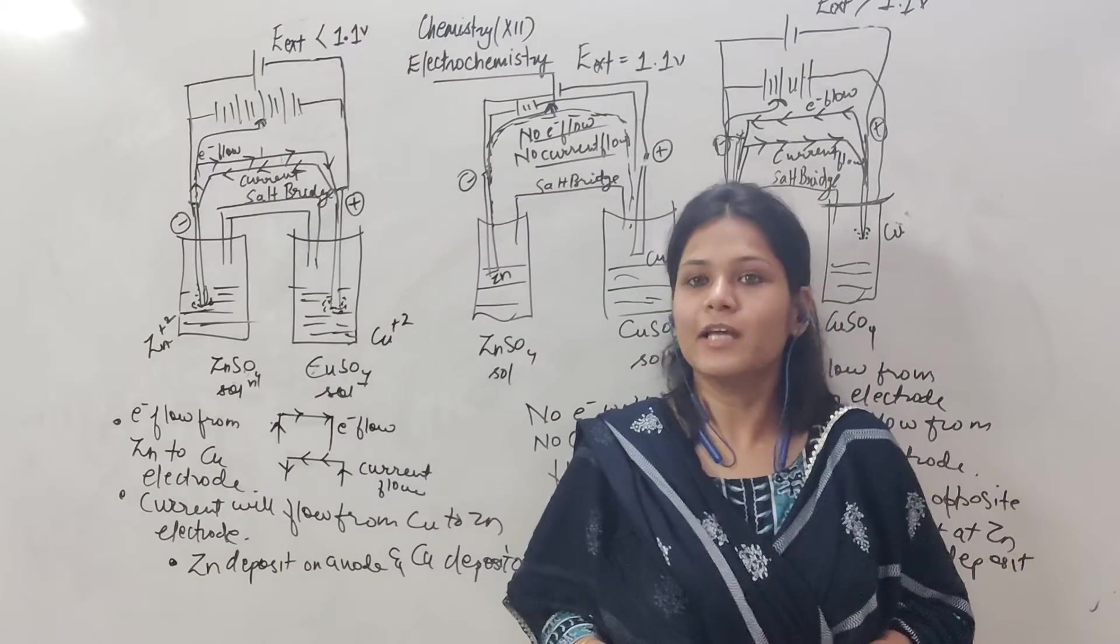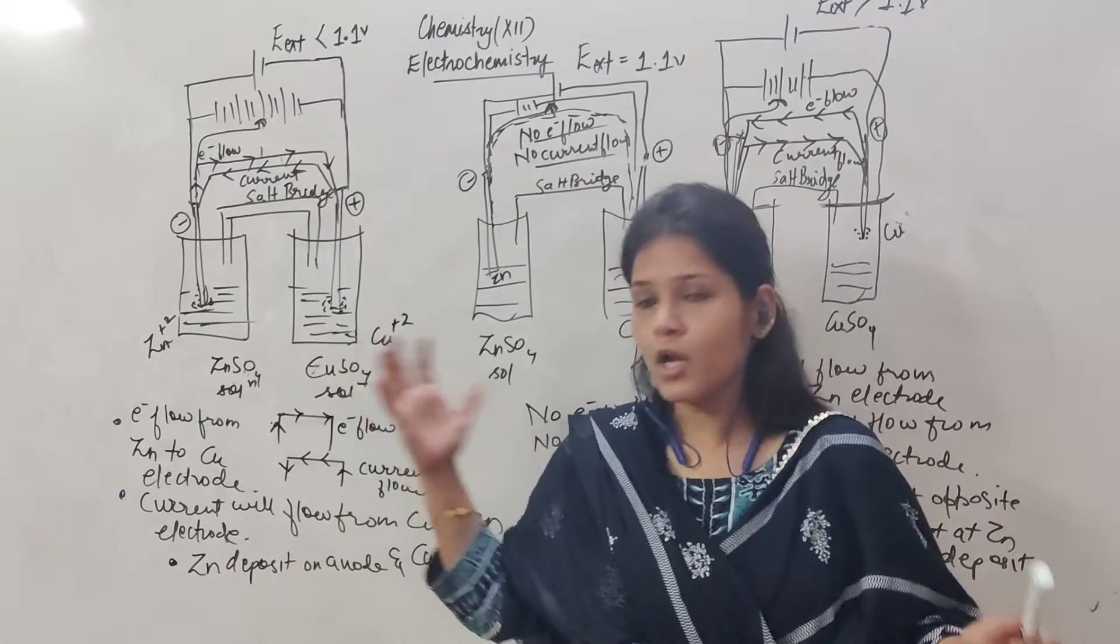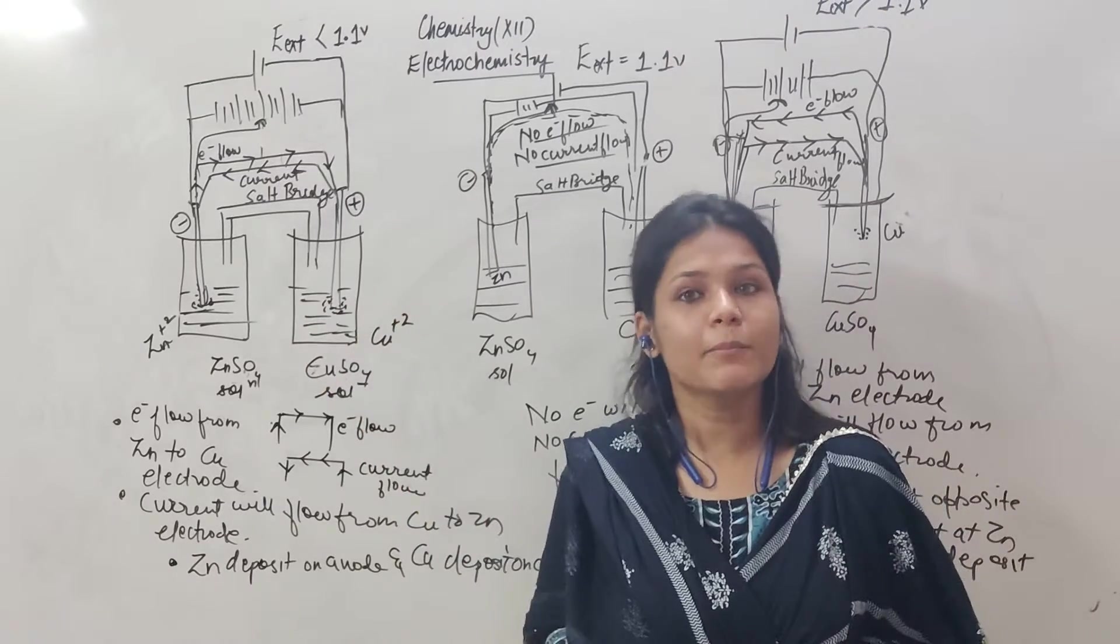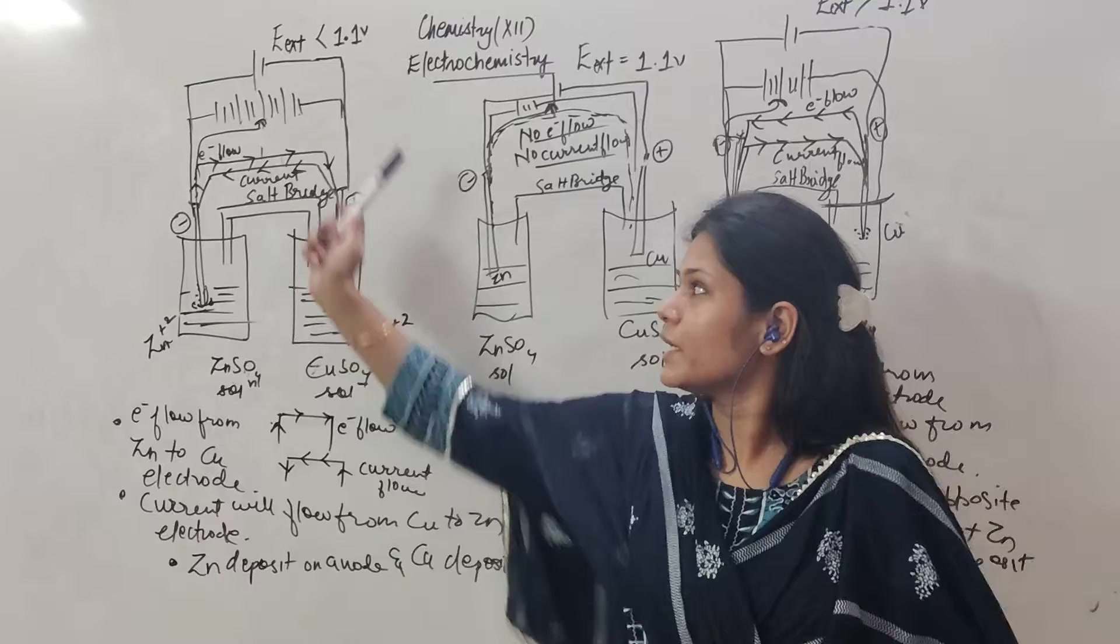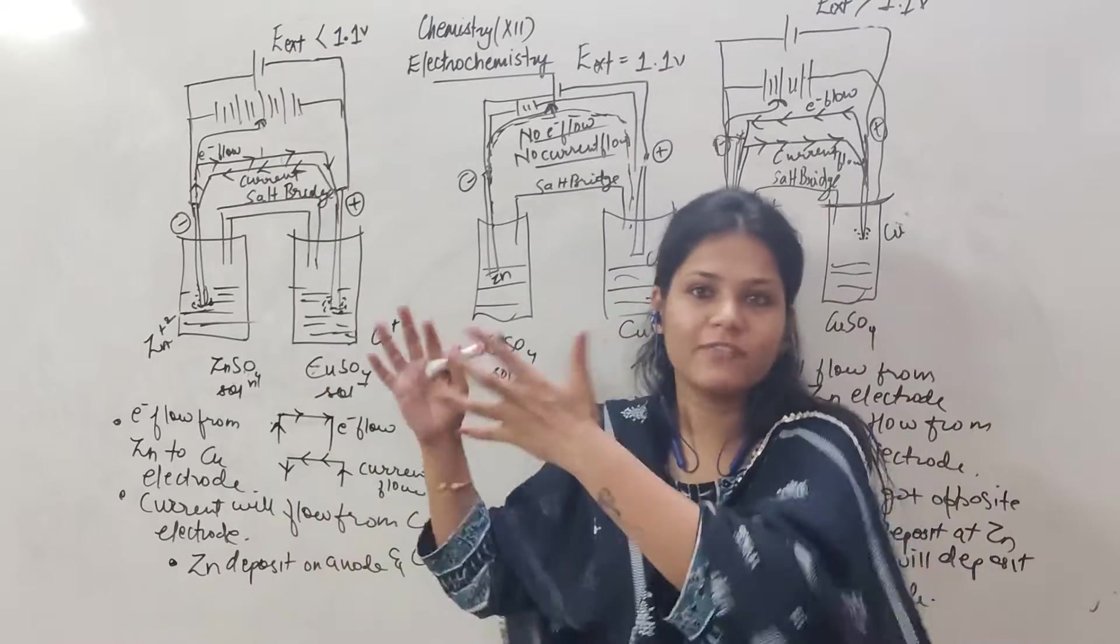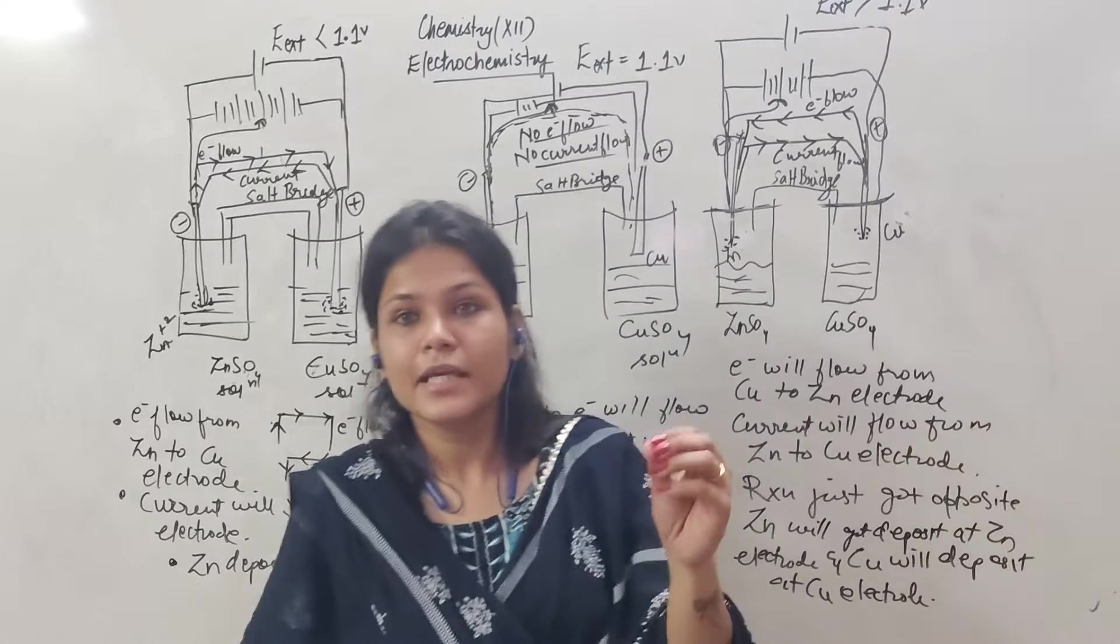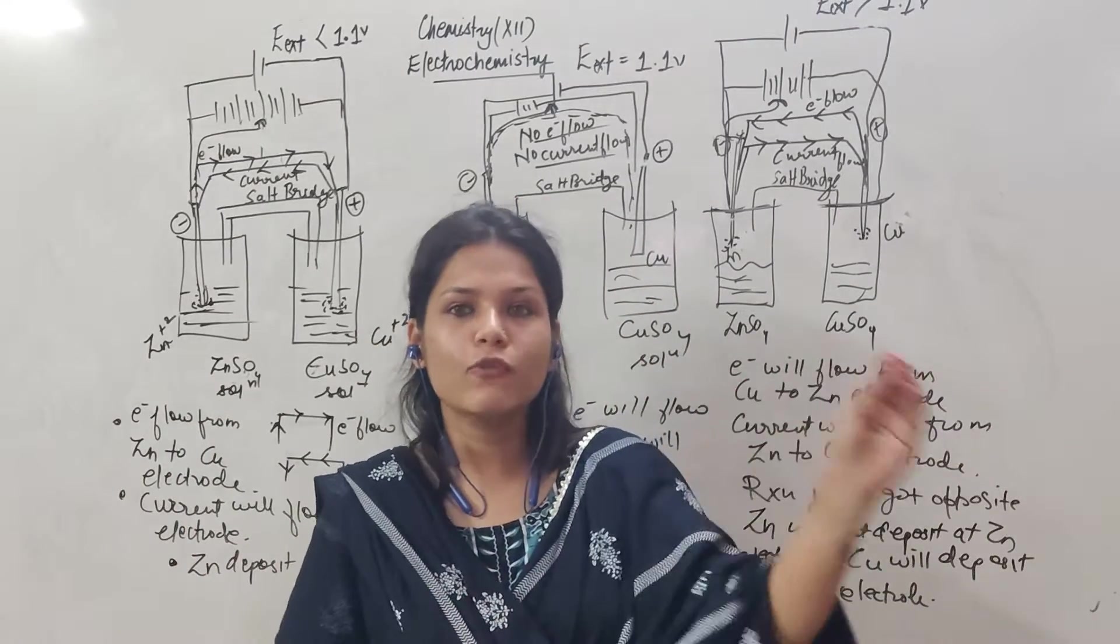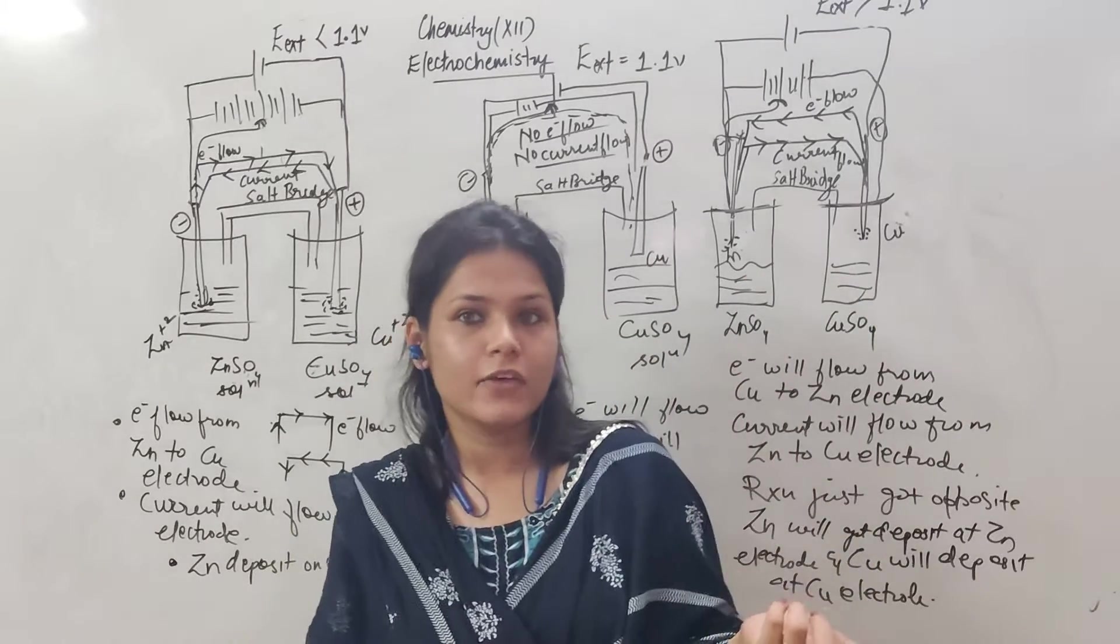We have discussed about Daniel cells in the previous class in introductory part. Daniel cell is copper and zinc mixture. Just like this cell we have created using salt bridge and electrodes and voltage devices we have connected. Then I have discussed that if that particular cell voltage is fixed at 1.1 volt, then it will be known as galvanic cell.